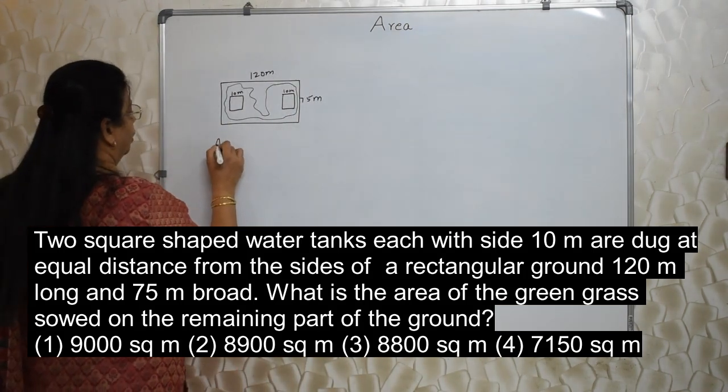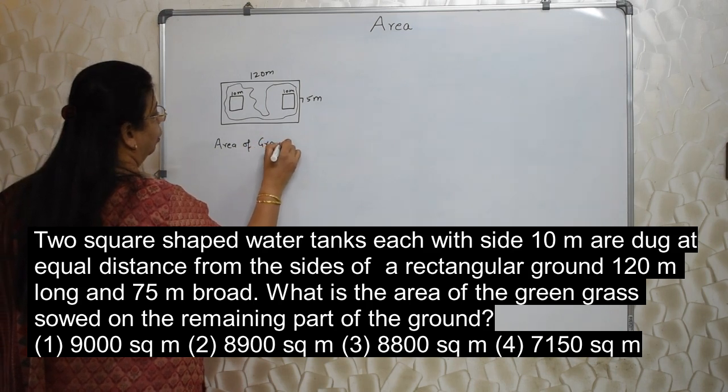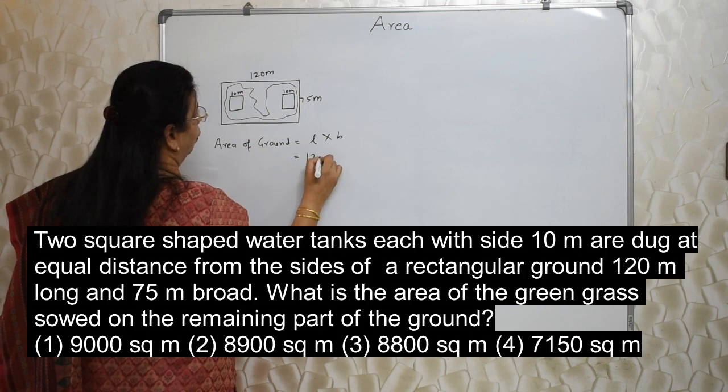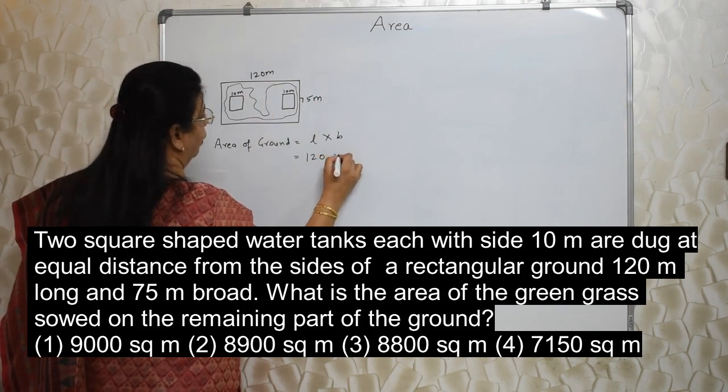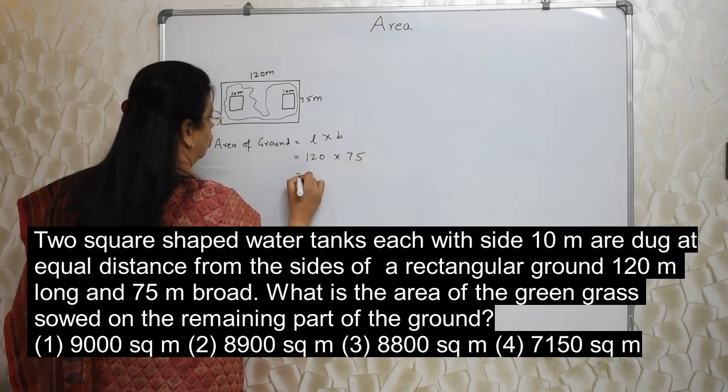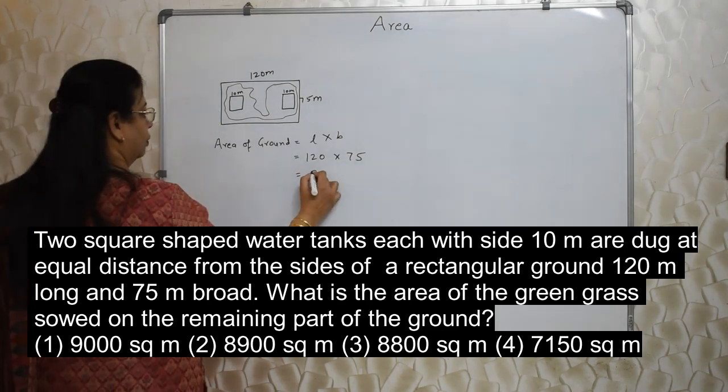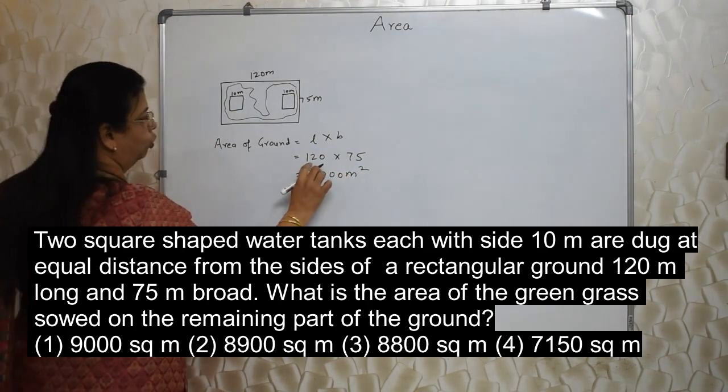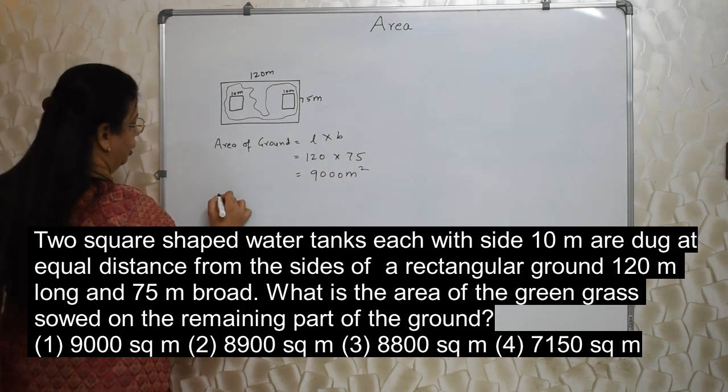In that case, your answer will differ. And that different answer will be there as one of the options. So you have to keep in mind, there are two tanks, not one. Okay. Let's start. Area of rectangle ground is length into breadth. That is 120, all are meter. So no tension about conversion. 120 into 75. So what is the answer? 9000. 9000 meter square is the area of the ground. You should do this multiplication properly at the time of examination.